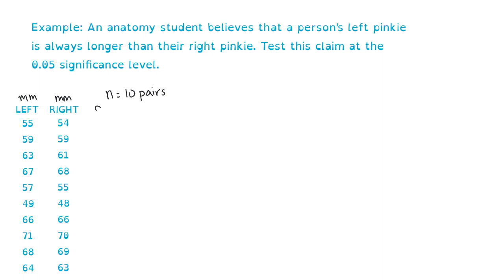From that data, we can calculate the difference in each pair — we call that little d. For our first pair, 55 minus 54 gives a d of 1. The next pair, 59 minus 59, gives a difference of 0, meaning that person's left and right pinkies are the same length. Our next person's left pinky is 2 millimeters longer than the right. Our fourth person actually has a left pinky shorter than the right, so the d value is negative 1. As long as we're consistent with how we subtract each pair, having negatives and positives makes sense. We go ahead and find all the differences for each pair.